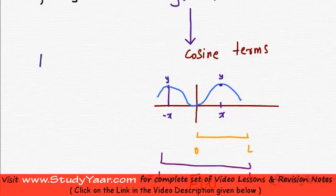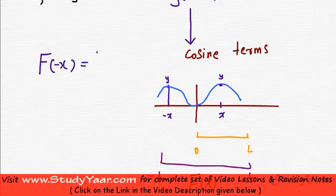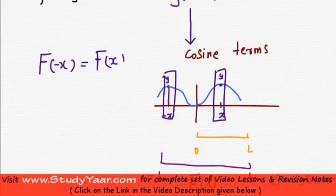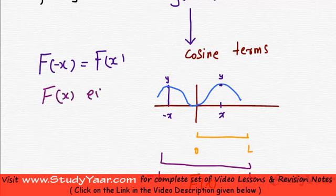then it is an even function, right? Because your capital F of minus x is equal to capital F of x. Therefore your F of x is even.